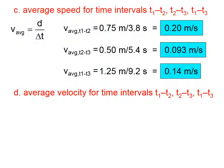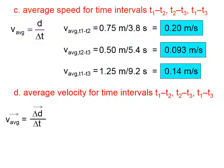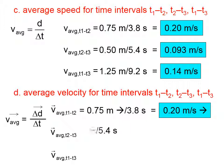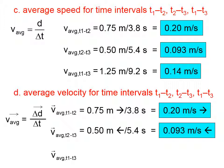What about his average velocity for these time intervals? Velocity is displacement over time. Between times 1 and 2, he travels 0.75 meters to the right in 3.8 seconds — 0.20 meters per second to the right. Notice that whenever we report a velocity, we must give a direction. Between time intervals 2 and 3, he travels 0.5 meters to the left in 5.4 seconds, so his average velocity is 0.093 meters per second to the left.